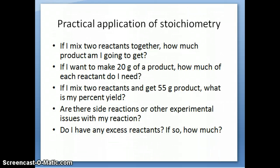The second part of stoichiometry that I touched on is this idea that it's very practical. The questions you can ask once you understand stoichiometry are listed here. For example, if you mix two reactants together, how much product are you going to get? Or if you want a certain amount of product, let's say 20 grams, how much of each reactant do you need to put into the flask? If you have two reactants and you get a certain amount of product, what's your yield? How much do you actually get in terms of percentage? Do you have any side reactions or other experimental issues? You can figure this out by calculating the percent yield. Do you have excess reactants? If so, how much can you recycle?